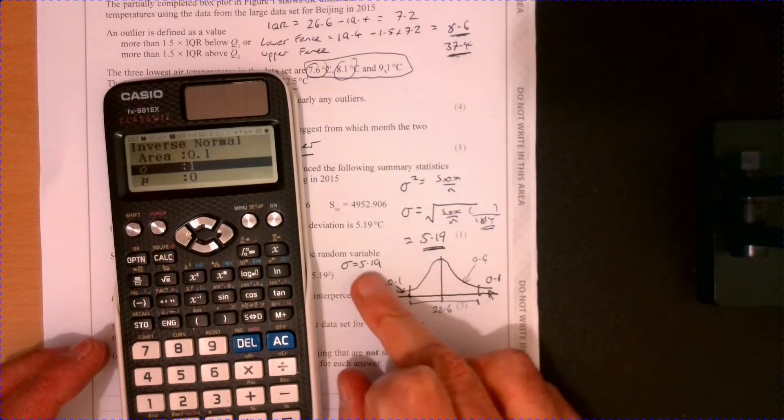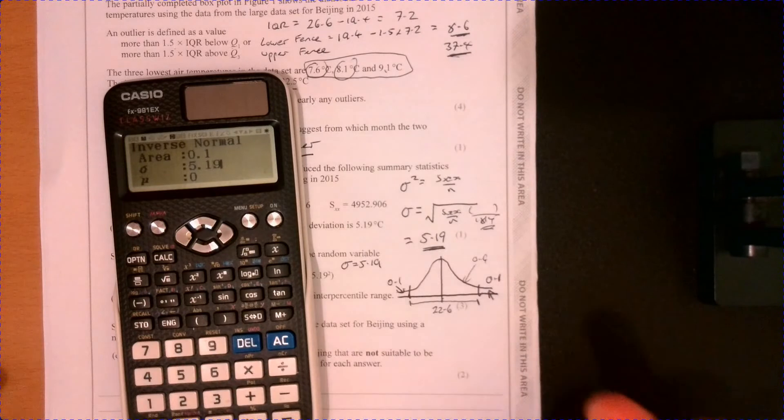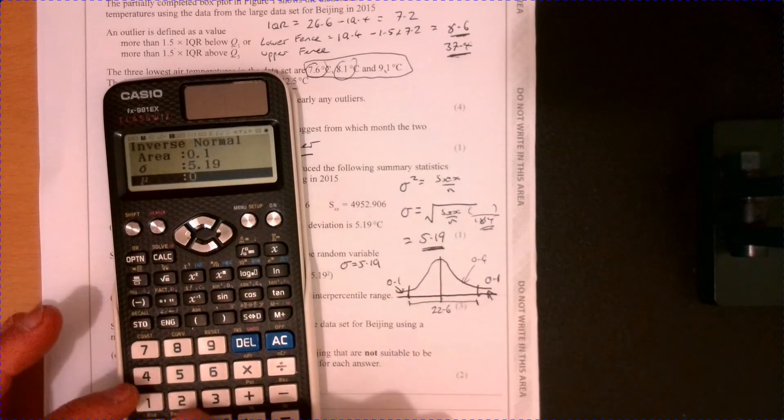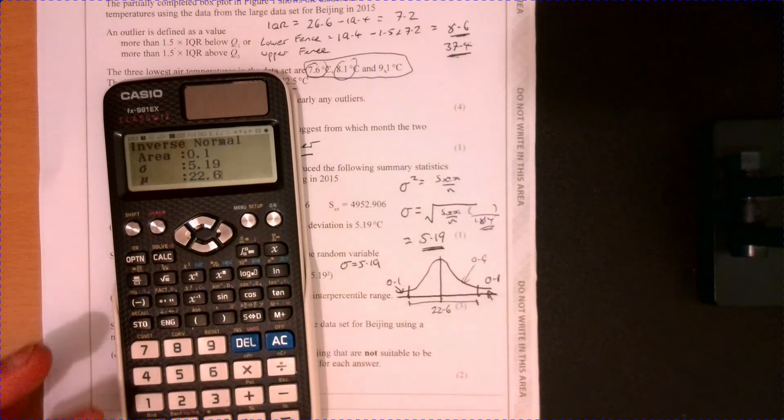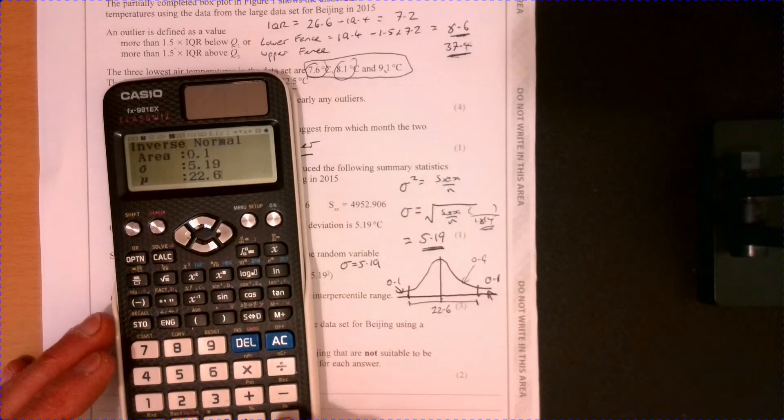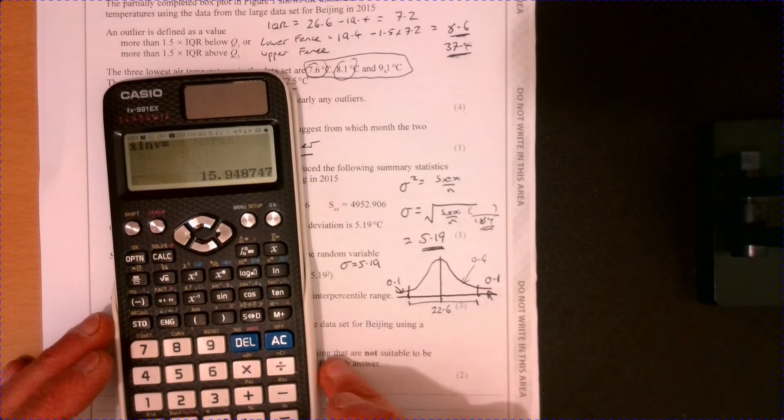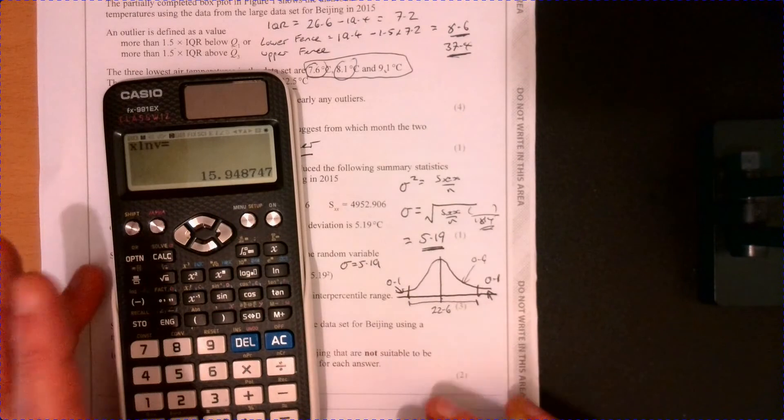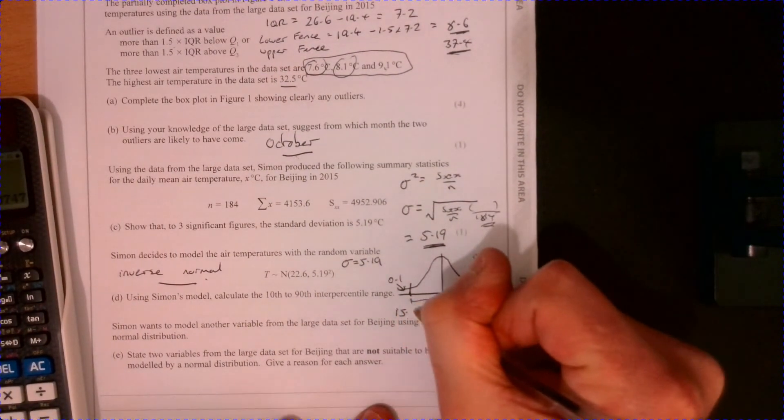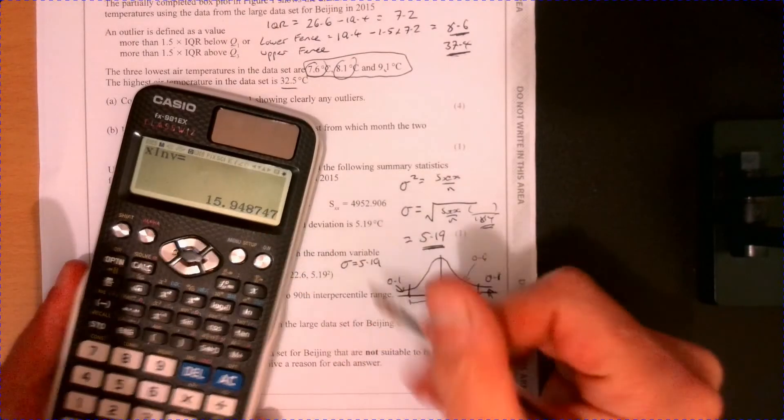now I can put in 5.19. You just see how easy this is. It made this life so much easier for us. 0.6, there we go. And this should give me a figure. It's going to be a bit less than 22.6. So let's have a look. Here we go. 15.94. So 15 point... it's two decimals. I'll go 95.